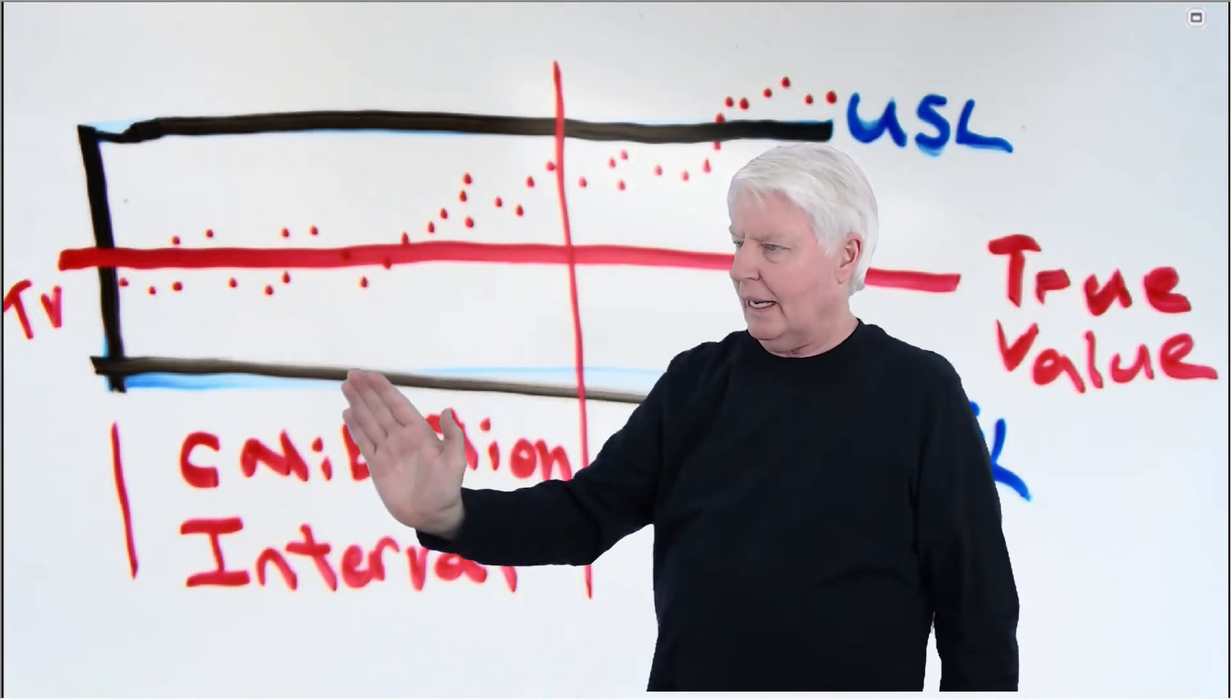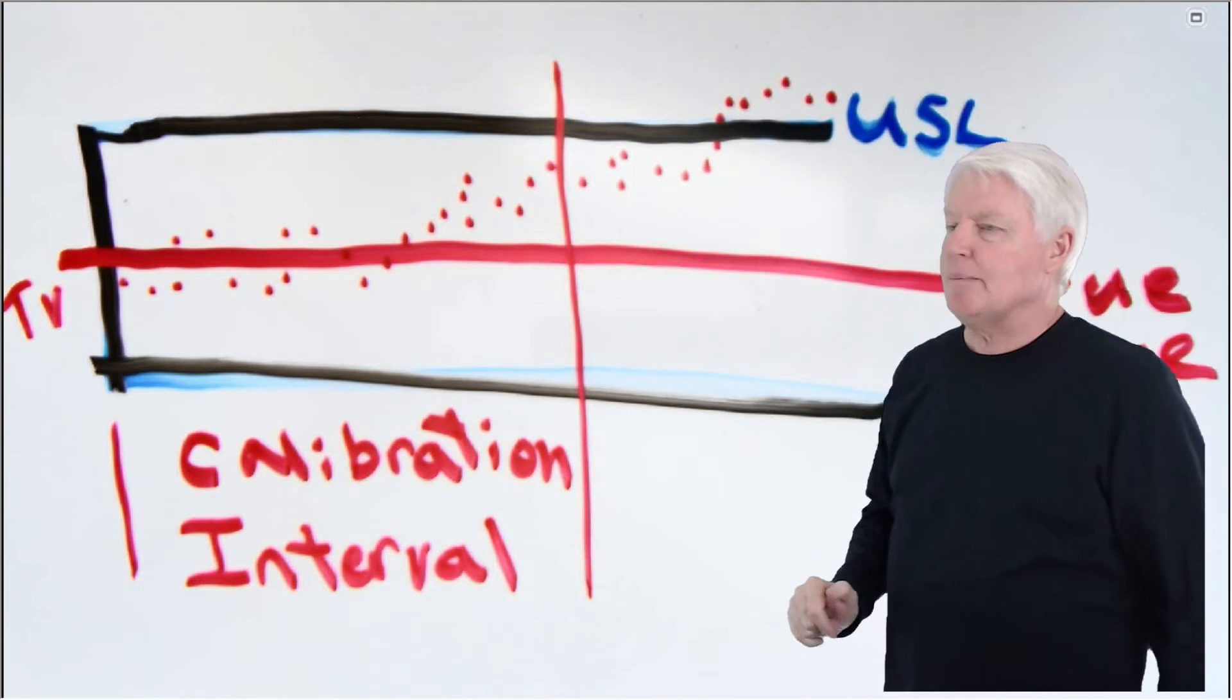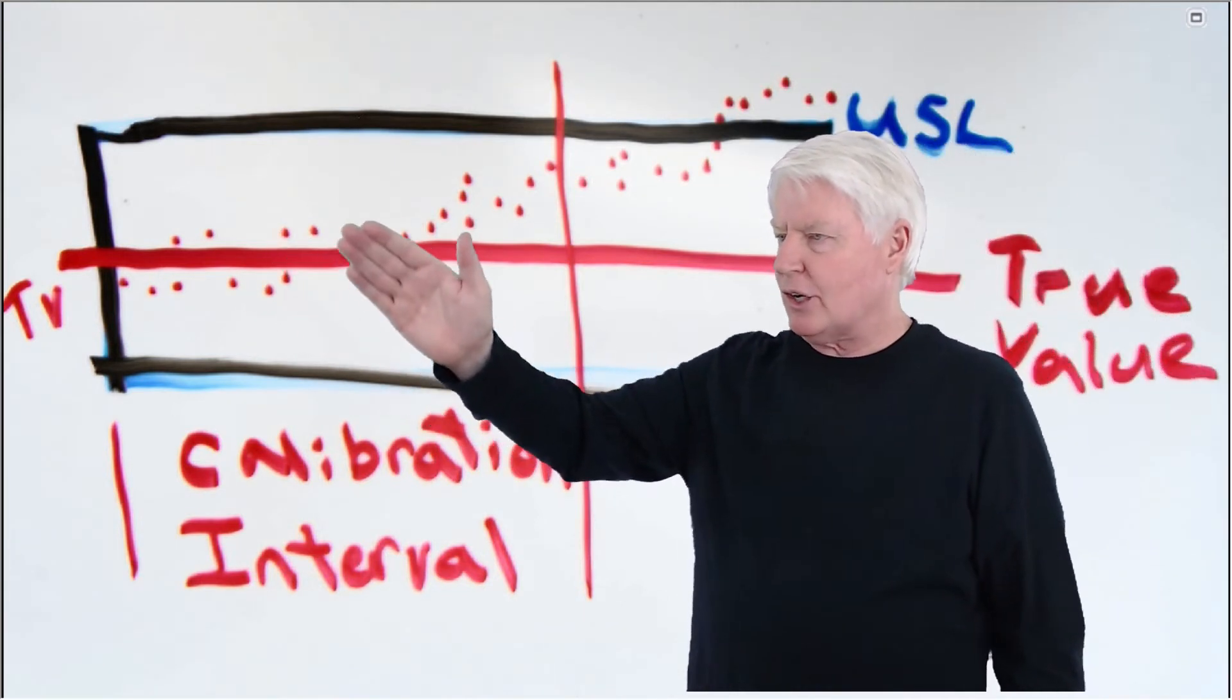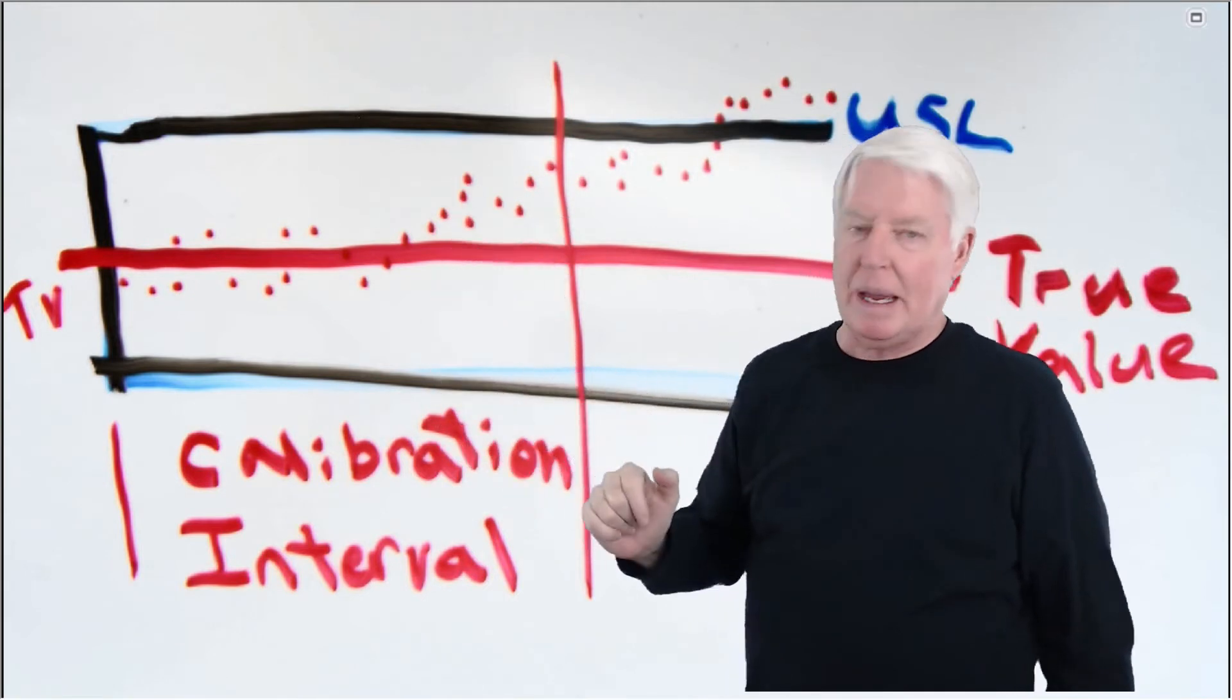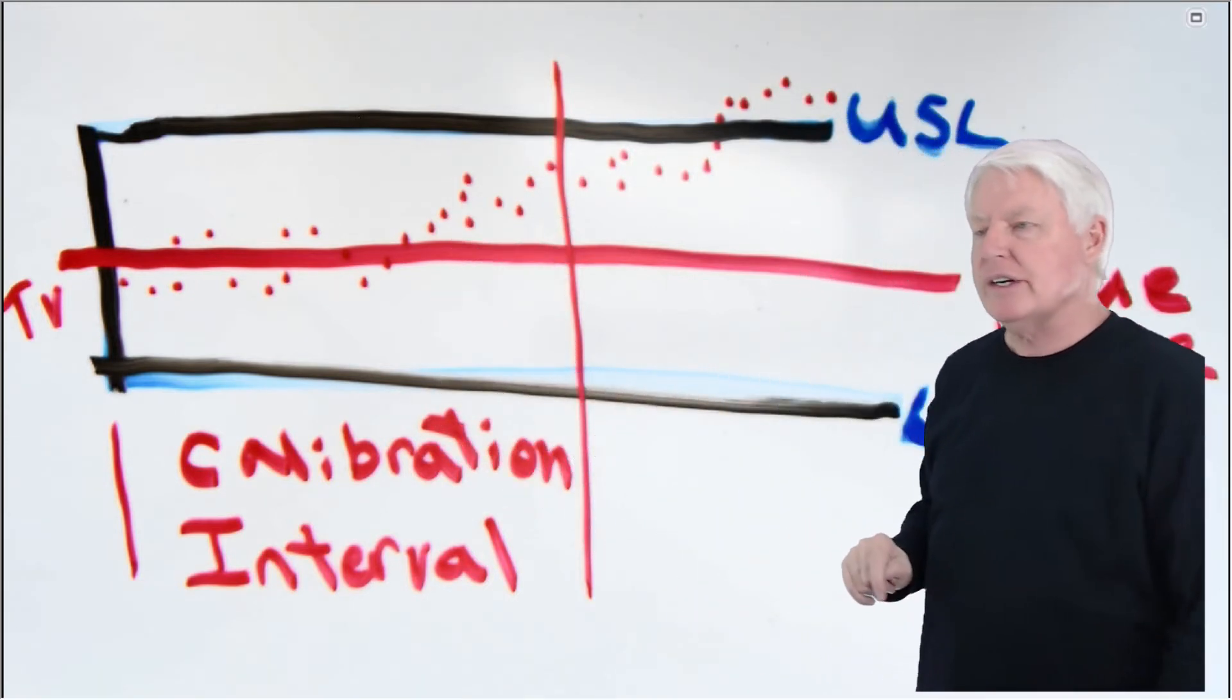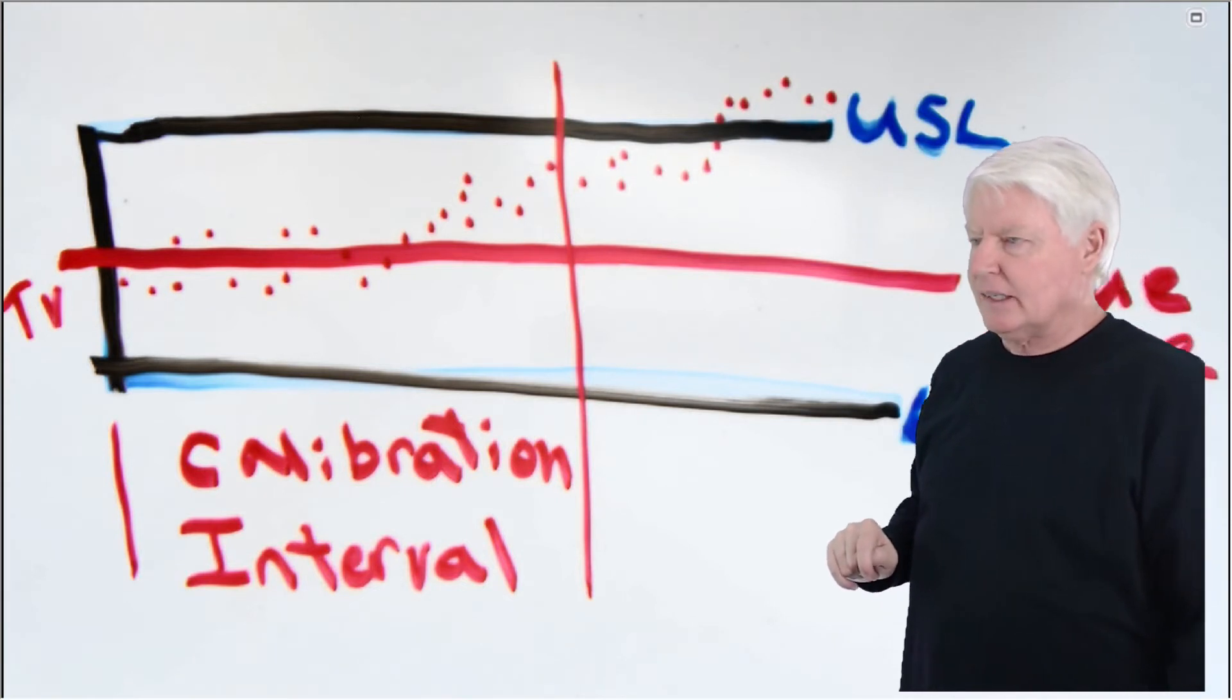And these black lines out here, that's the upper and lower spec limit. So as long as the actual measured value is within these spec limits, you're okay. You're falling within spec limits, so it's considered a calibrated instrument, an acceptable instrument.